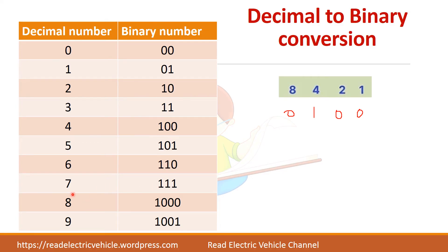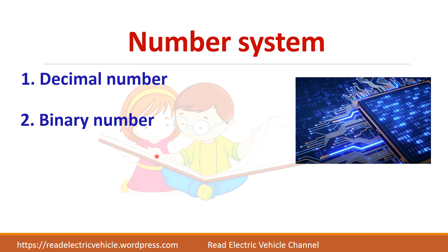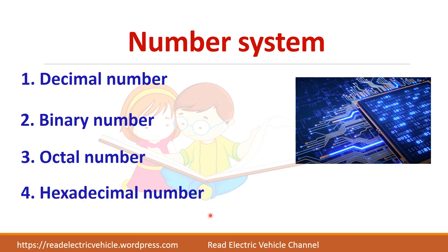After 7, that is from 8 onwards, you have to go for 4 bits. So we have seen about the decimal number system and the binary number system. Next we have the octal number system and hexadecimal number system, which are derived from the binary number.